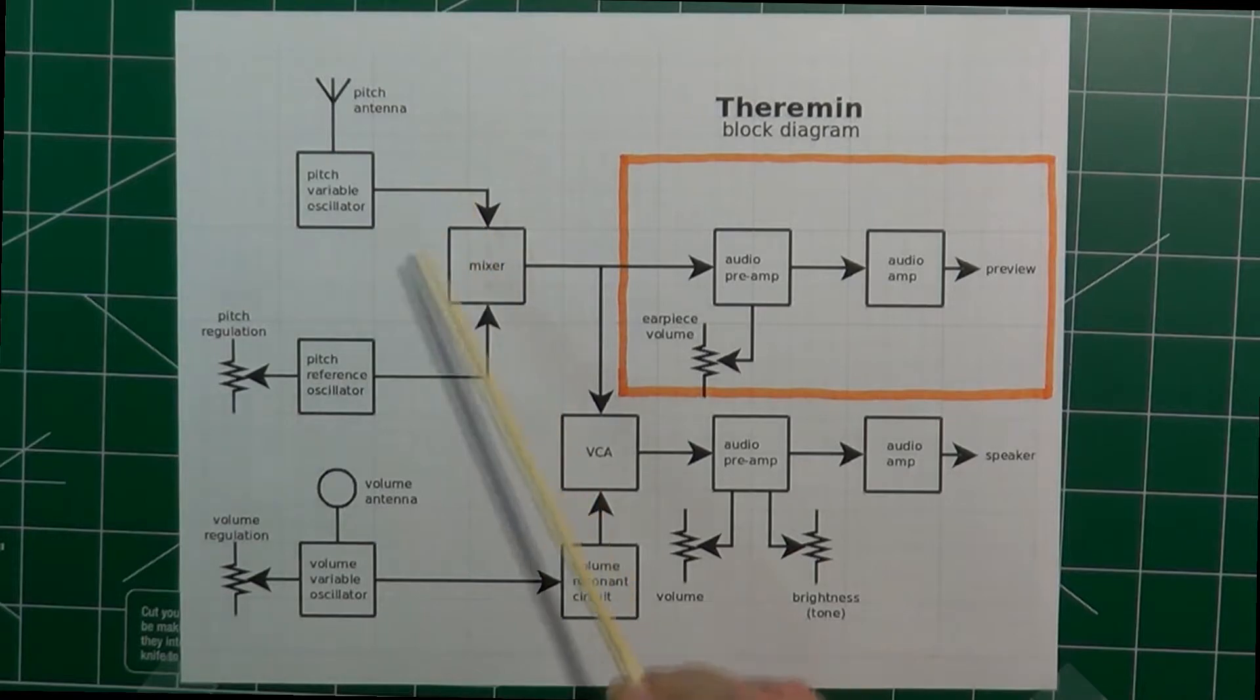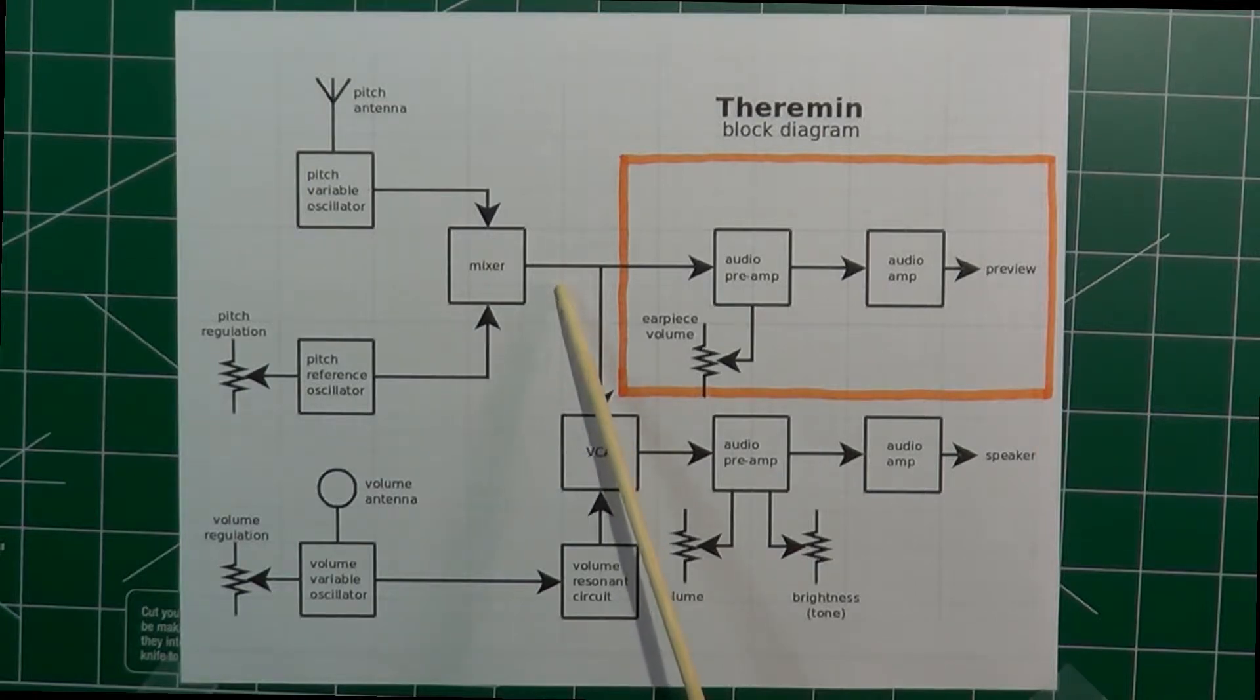The output of the two oscillators are sent to the inputs of a mixer, where the heterodyne process happens. In other words, the output of the mixer provides a signal with a frequency that is the difference of the frequencies of the two input signals. The output of the mixer is then sent to a voltage controlled amplifier, or VCA, which provides dynamics to the sound by allowing the player to increase and decrease the volume of the notes being played.